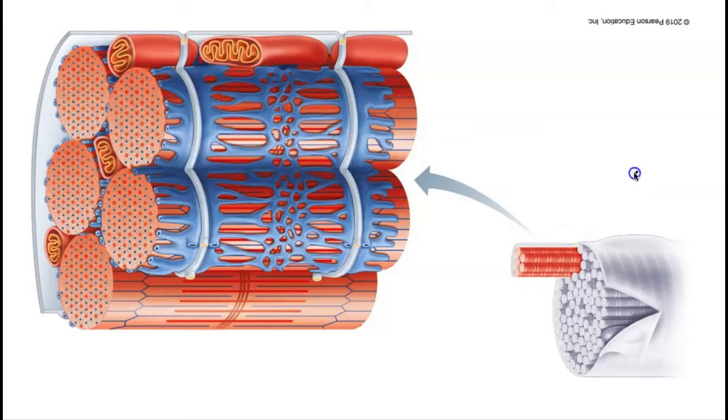Taking a look at the skeletal muscle cell, we can see that they're peeling back the sarcolemma and showing us that the cell is filled with these fibrous subcellular structures called myofibrils. Myofibrils fill the skeletal muscle cell.